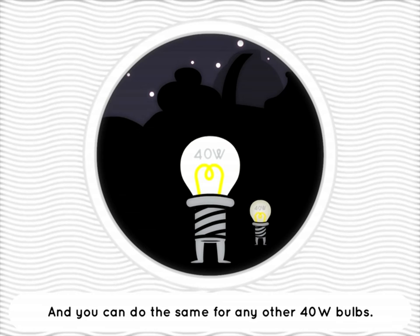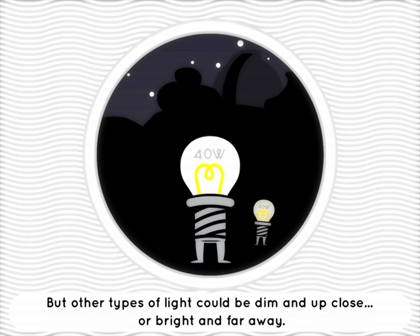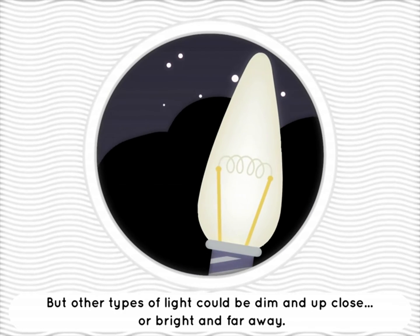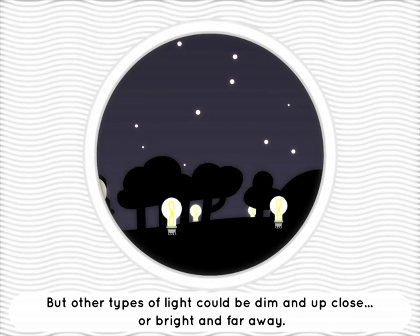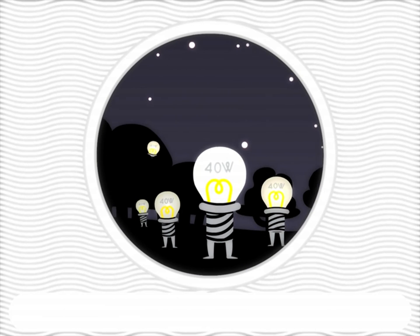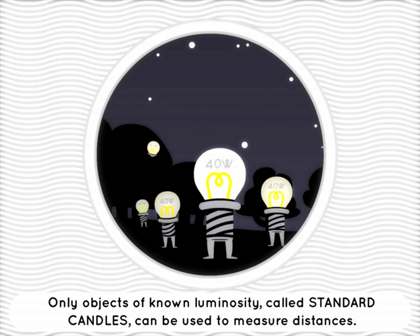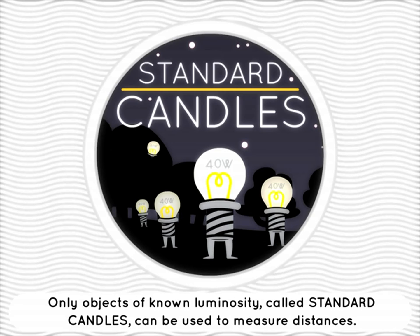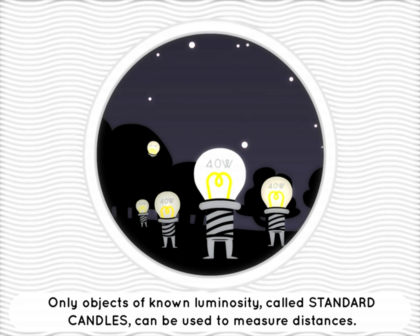You can do the same for any other 40-watt bulbs. But other types of light could either be dim and up close, or bright and far away. Only objects of known luminosity, called standard candles, can be used to measure distances.